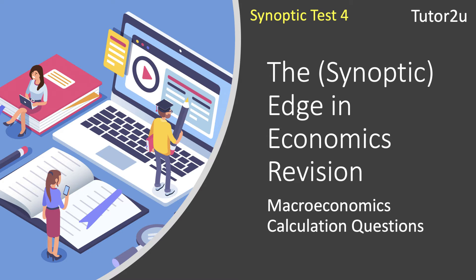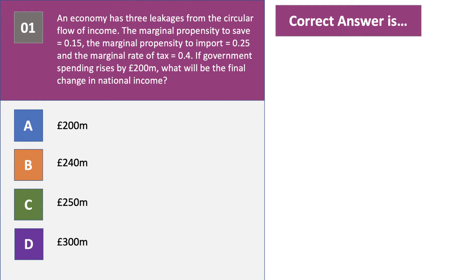Here's question one. An economy has three linkages from the circular flow. The marginal propensity to save is 0.15, the propensity to import is 0.25, and the marginal rate of tax is 0.4. If government spending increases by 200 million pounds, what will be the final change in national income? Please have a go at this question — press the pause button and press play when you want the answer.